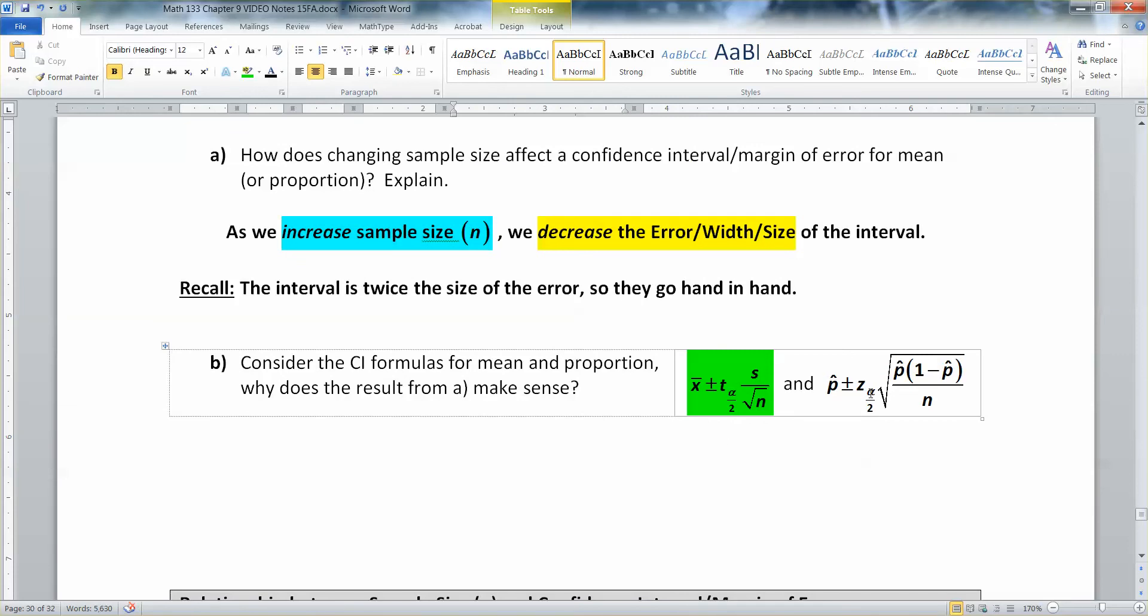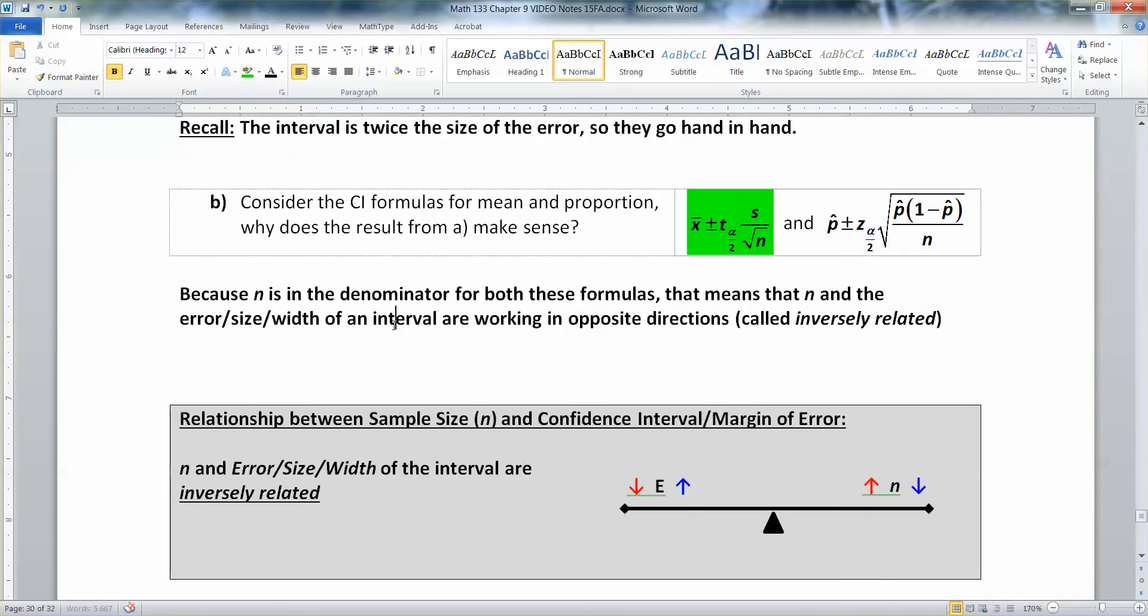Look where your sample size is. Do you see where the n is in these formulas? It's in the denominator. That's why this is happening. When it's in the denominator, it makes it inversely related. All right. So let me type that up.